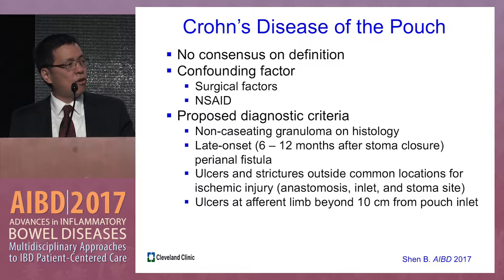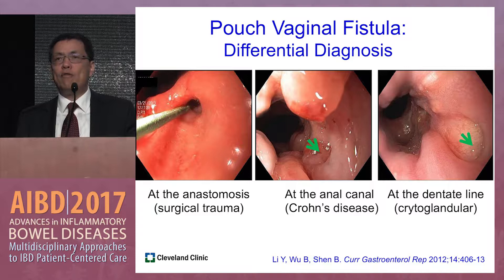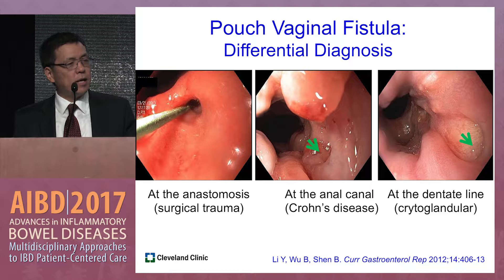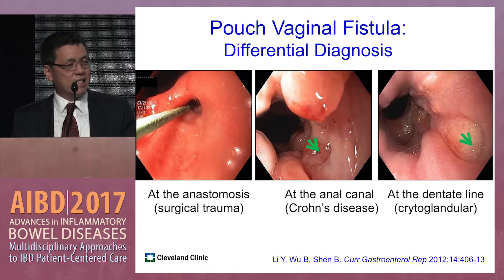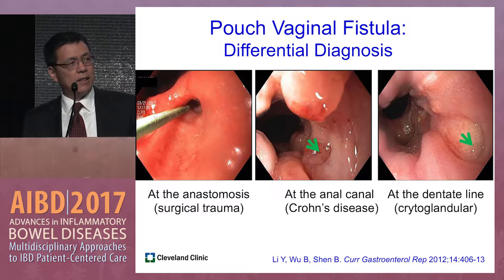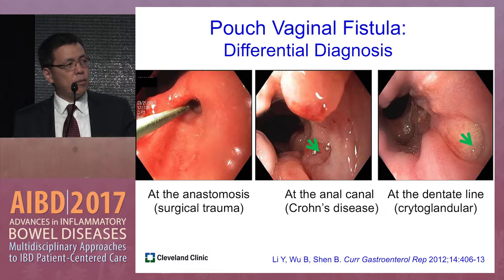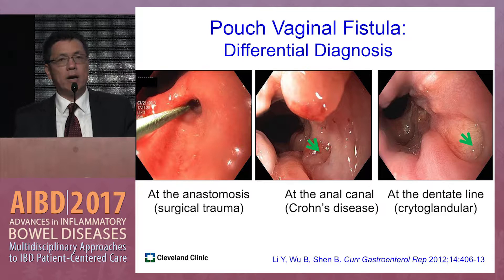Not all vaginal fistulas are related to Crohn's disease. A fistula caused by surgical trauma shows a hole next to the anastomosis with clean surrounding mucosa. A fistula opening at the dentate line with a clean anal canal can be related to cryptoglandular fistula, or anal gland infection. A fistula in the middle of the anal canal with granular mucosa is related to Crohn's disease. Sometimes a biologic agent is used as a diagnostic trial to differentiate these three conditions.